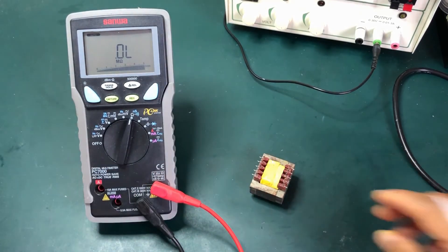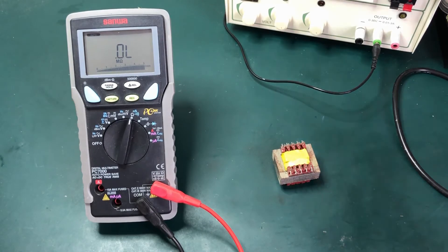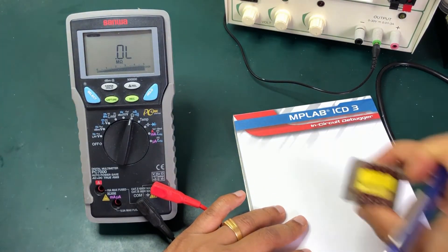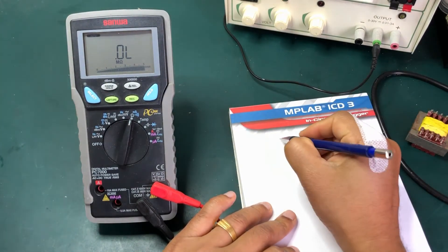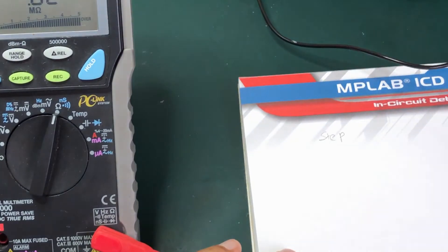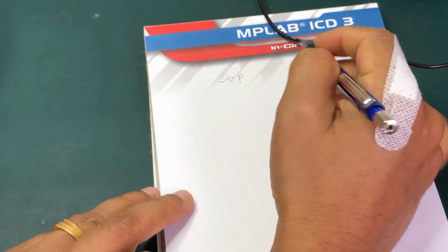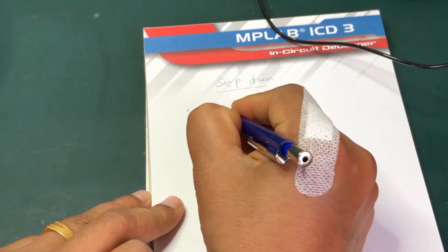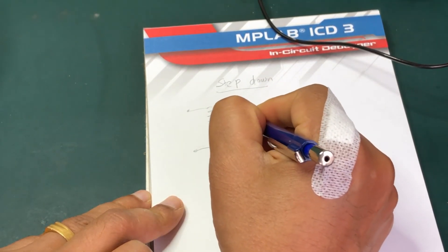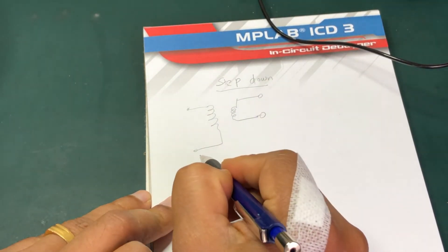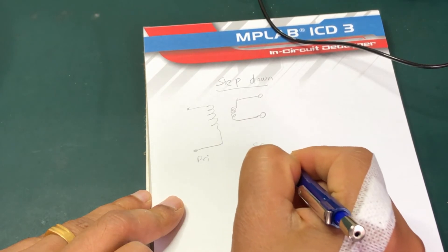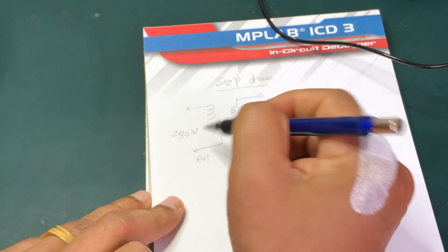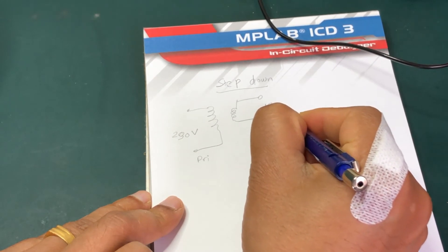So this will be the secondary side and that will be the primary side. Now I'm going to show you why this method works with a little bit of calculation. This transformer is a step-down transformer, and we can draw the transformer like so — this will be our primary winding and this will be our secondary winding. For this particular transformer, the label says it's 230 volts on the primary and 15 volts on the secondary.